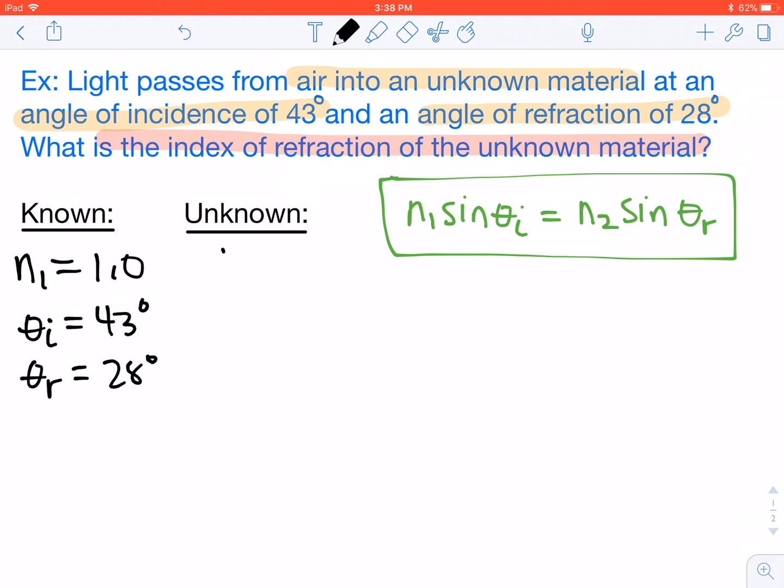Our unknown value in this case is N2. We take a look at the equation on the right here. N1 times sine of theta I equals N2 times sine of theta R. We're going to start plugging in our values.